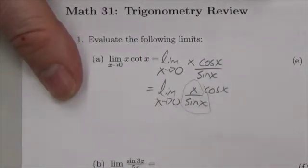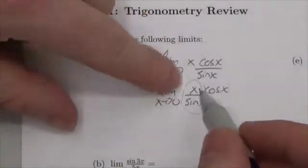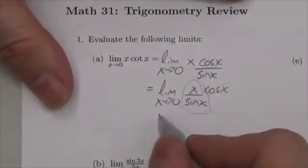And I know right now that the limit as x approaches zero of sine of x over x is one. So x over sine of x, the reciprocal, is also one.